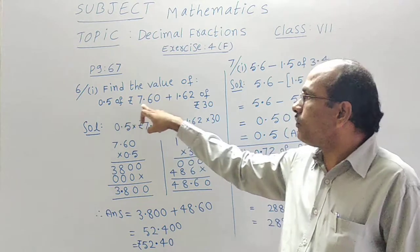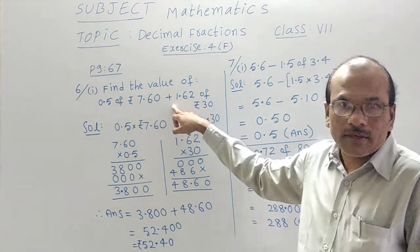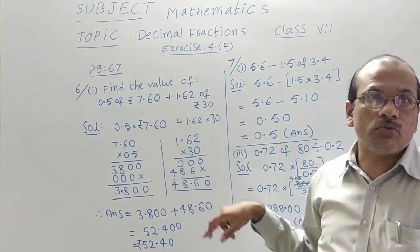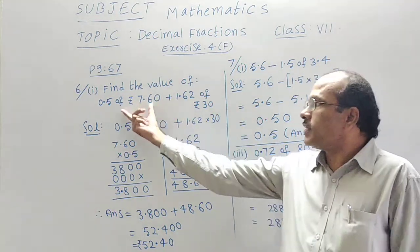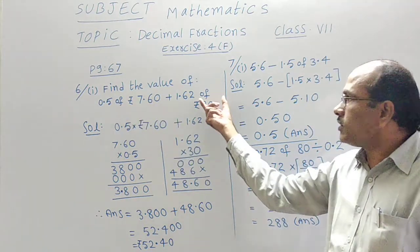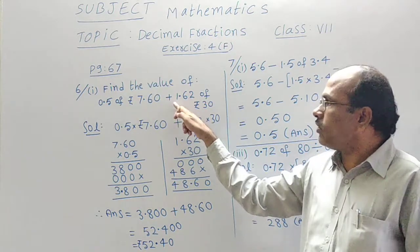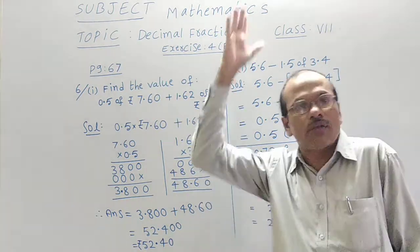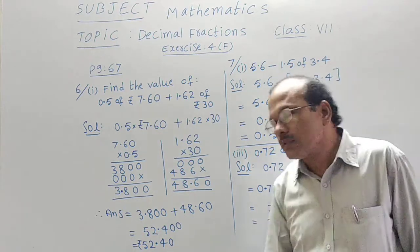0.5 of 7 rupees 60 paise plus 1.62 of 30 rupees. This result we have to find out first. This result also we have to find out. Both the results we have to add. That gives you the final result which we required. Is it clear?